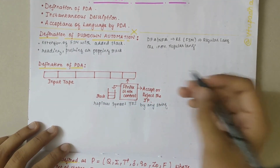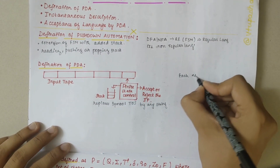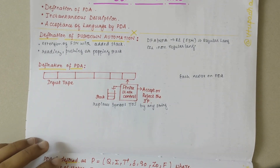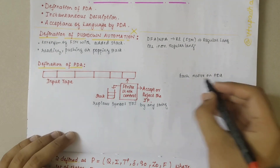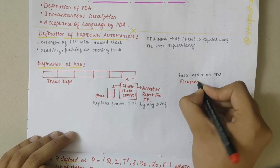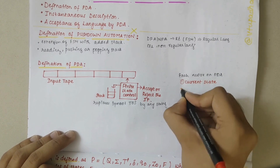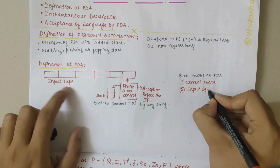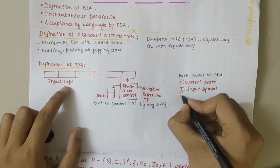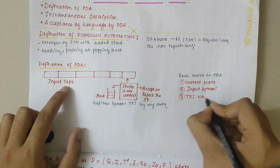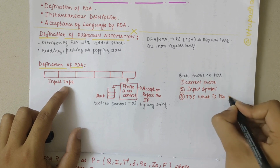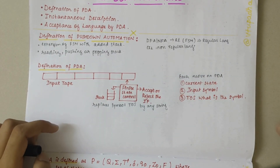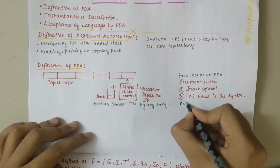Each move on PDA depends on three things: the current state, the current input symbol being read, and what is on top of the stack. By considering these three, certain actions are performed on the PDA.